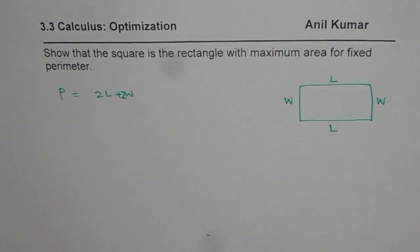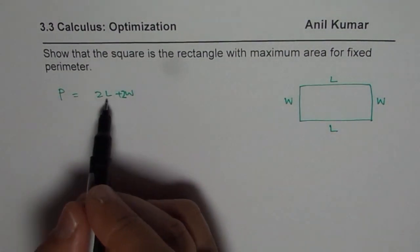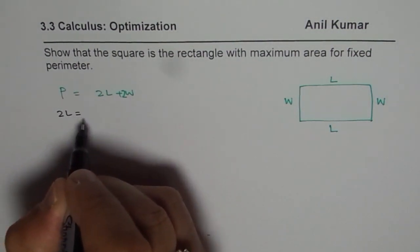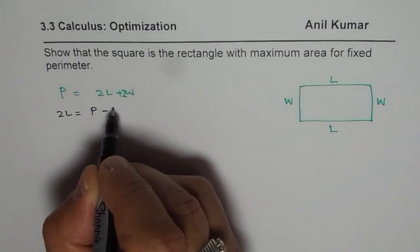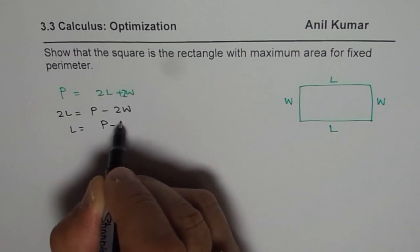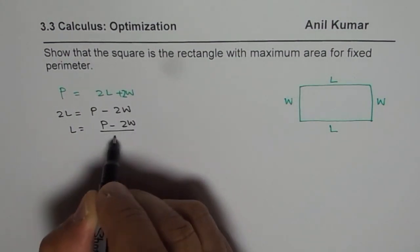Now if perimeter is fixed, then we can always write one dimension in terms of the other. So we say 2 length equals perimeter minus 2 width, or length equals perimeter minus 2 width divided by 2.